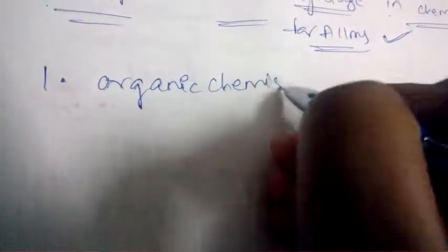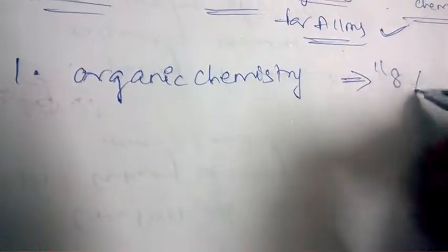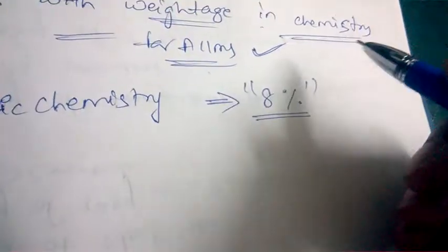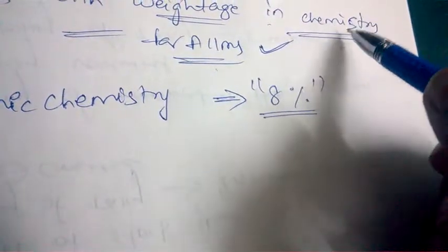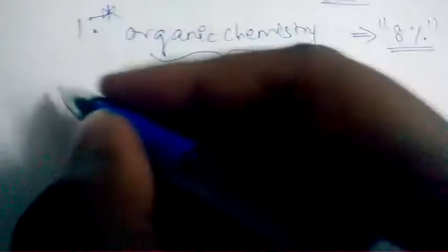The first and most important chapter with high weightage is organic chemistry. Organic chemistry has the highest percentage of weightage in the AIIMS chemistry paper — 8% of questions will be appearing from this particular topic. This is the highest weightage chapter.